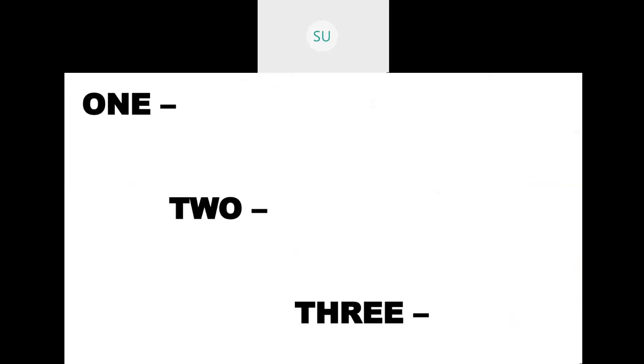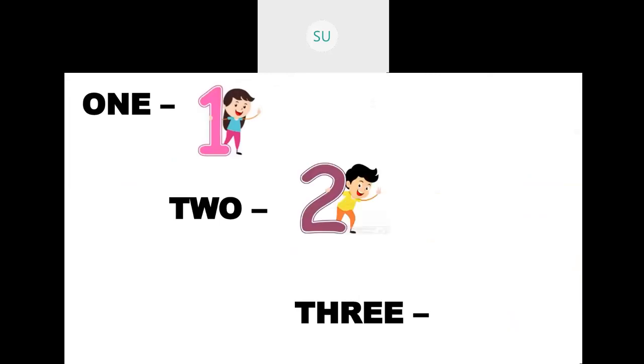Then let's see the number names for these numbers. So O-N-E is 1. Then we have T-W-O is 2. Then T-H-R-E-E is 3. So 1 is ONE, 2 is written as TWO, and 3 is written as THREE.